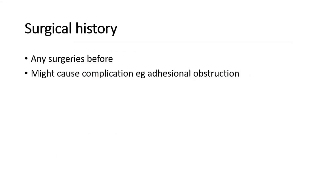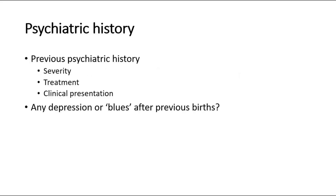For surgical history, did she go for any surgeries before? What was the cause, and when was it? Surgical history is important as it might cause complications like adhesional obstruction of the intestine. For psychiatric history, ask about any previous psychiatric history, how was the severity, what treatment was given, and what were the symptoms. If she had pregnancies before, ask whether there was any postpartum blues or depression experienced after a previous birth.